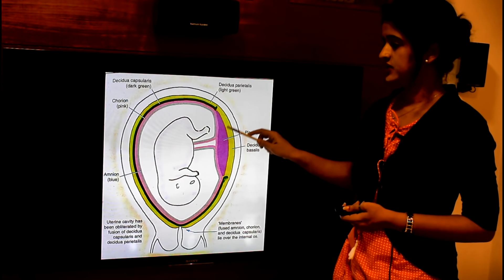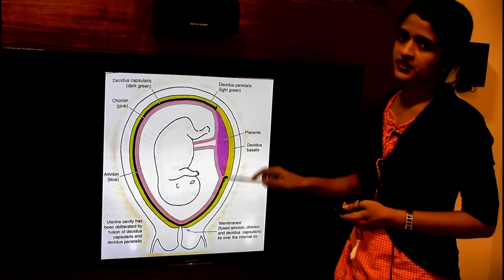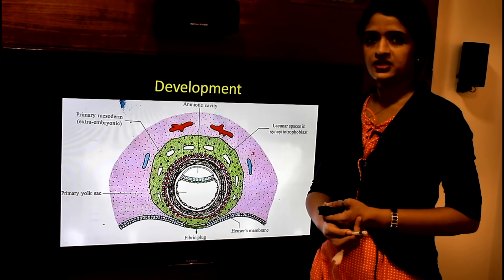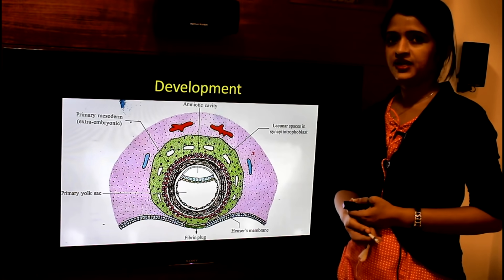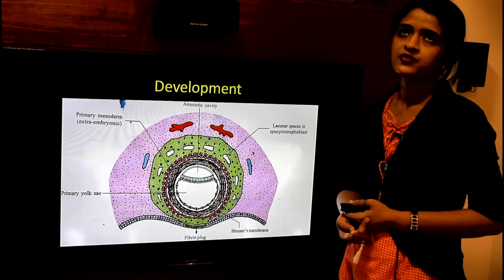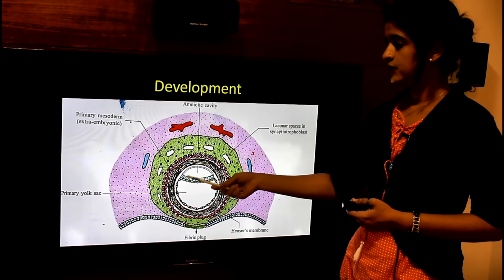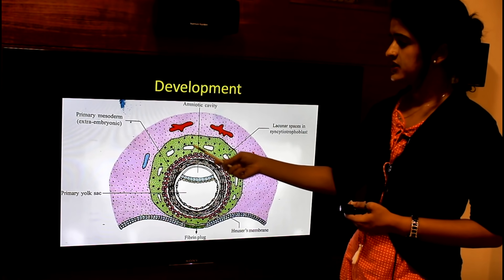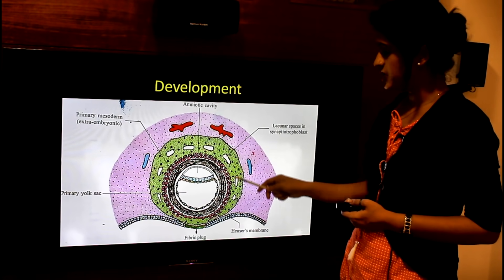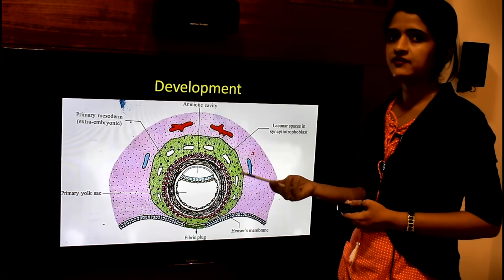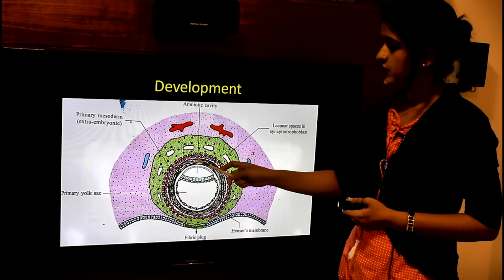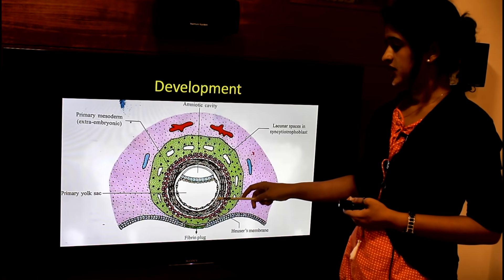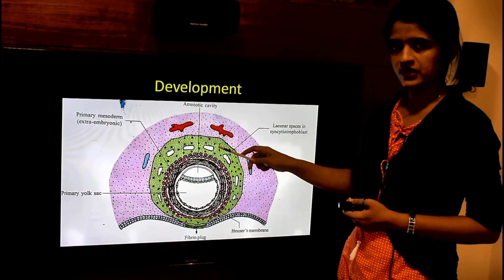The placenta is that part adhered to the endometrium at the decidua basalis. When implantation is complete, there are two major portions of the embryo: the embryoblast and the trophoblast. At the end of the first week and beginning of the second week, the trophoblast differentiates into two layers — the outer syncytiotrophoblast and the inner cytotrophoblast. We also have extra embryonic mesoderm lying outside the embryoblast.